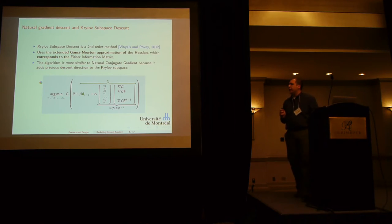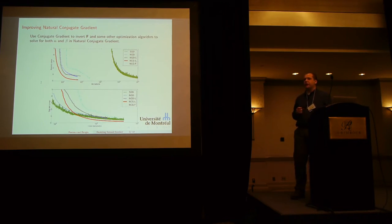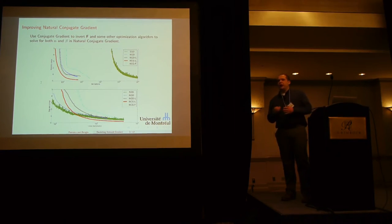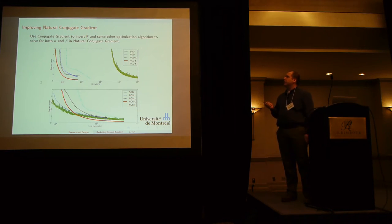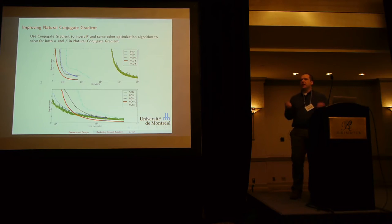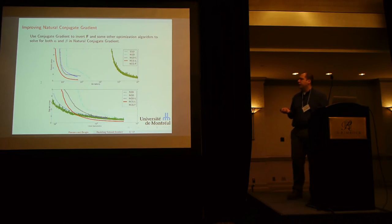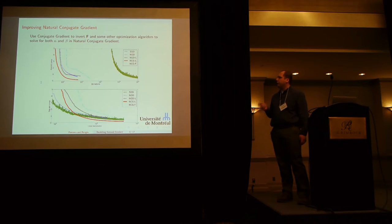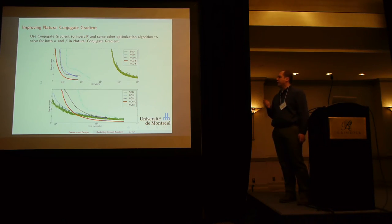We took all these understandings and tried to put them together to see if we could do something better. To improve the natural conjugate gradient, we used an HF-style approach to invert the Fisher information metric. Similar to Krylov subspace descent, we used an off-the-shelf optimizer to solve for both alpha and beta in the nonlinear conjugate gradient steps. This algorithm, shown in red, performs slightly better than the others. In blue we have HF, and the original natural conjugate gradient using the Polak-Ribière formula is also shown, along with SGD in green.